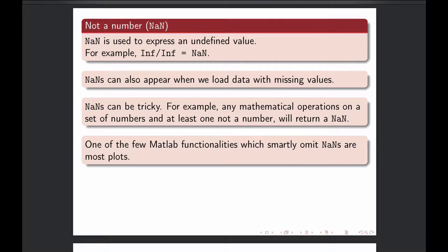And NANs can be actually tricky because, for example, many mathematical operations, when you try to do something on a vector or matrix that has a NAN within its values, then the result will be NAN.